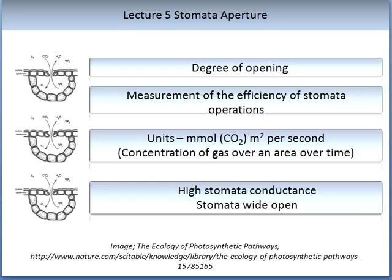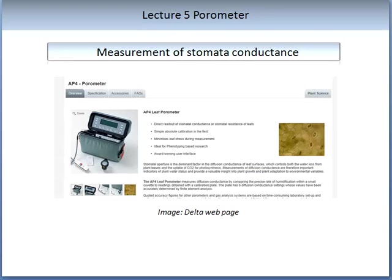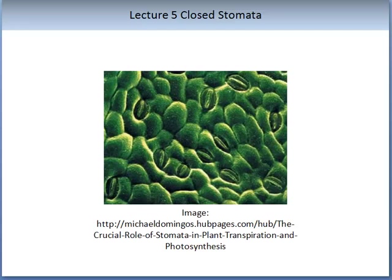The higher the stomata conductance, the wider the stomata are open. The wider they are open, the more carbon dioxide they are taking into the plant, but also the more water potentially lost through this opening. There are a few ways to measure stomata aperture. The most common is a porometer — the image on the slide shows a leaf porometer made by Delta, commonly used in field experiments. Another method is an infrared gas analyser. A third approach is taking very high-resolution photographs to physically see how open or closed each stomata is. The image on the slide shows most stomata to be closed, meaning the guard cells are flaccid.